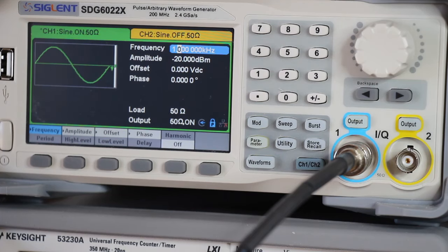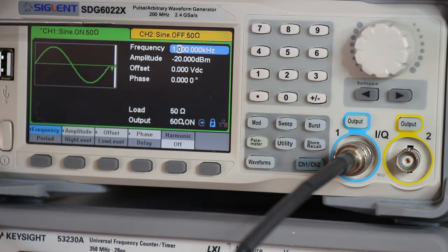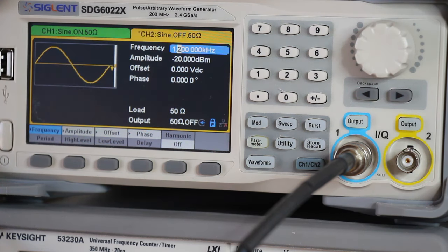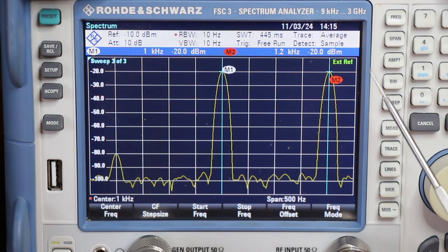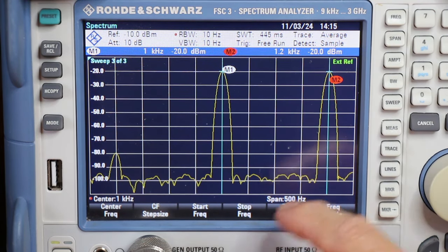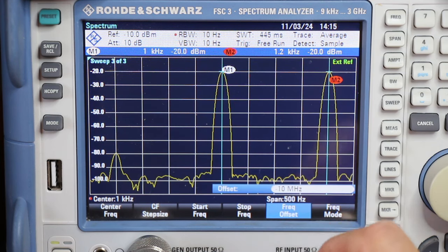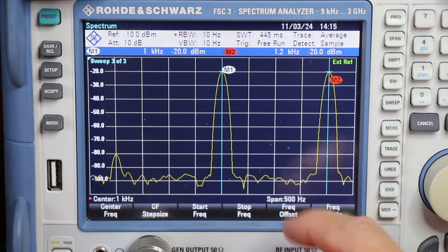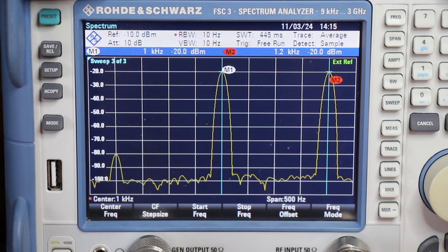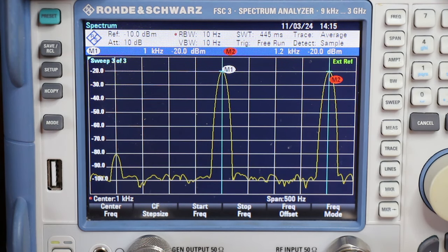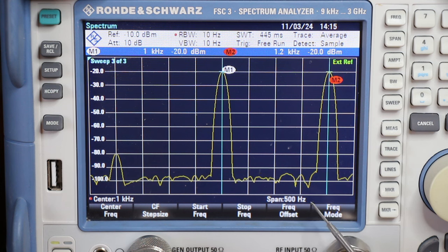Let's start with the same two tones, 1 kilohertz and 1.2 kilohertz, but now the level is minus 20 dBm. This is the first tone, and this is the second tone. And here are the two tones on the spectrum analyzer. I set a frequency offset of minus 10 megahertz, so the display is showing the correct tone frequencies.